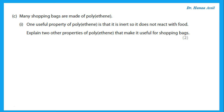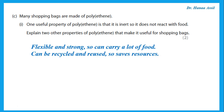Explain two other properties of polyethene that make it useful for shopping bags. Polyethene is basically what we call plastic. It is flexible and strong, so it can carry a lot of shopping. It can also be recycled and reused, which saves resources. There are many other possible answers — if it is reasonable, it is acceptable.